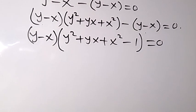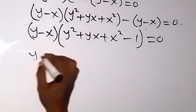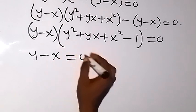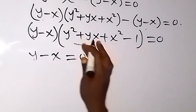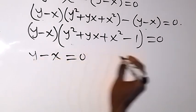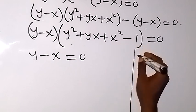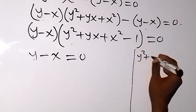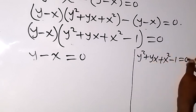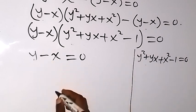We multiply these two factors and the result is zero, so either y minus x equals zero, or y squared plus yx plus x squared minus 1 equals zero. Let's call these case one and case two, and deal with case one first.